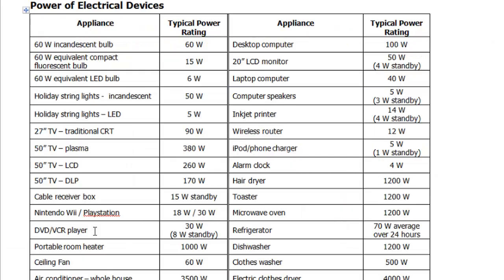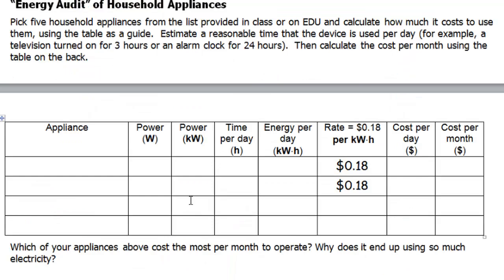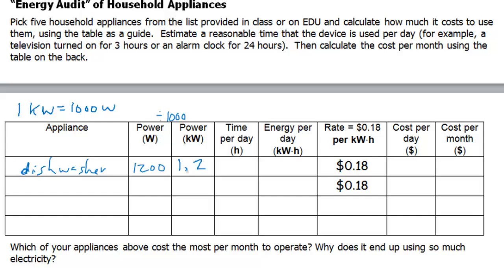Here's what this table looks like. Let's pick one device as an example: a dishwasher, which is a 1200-watt dishwasher, and you run it once per day, and that cycle usually takes about 45 minutes. So let's put these numbers into the table. Appliance: dishwasher. Power: 1200 watts. We want to convert that to kilowatts first by dividing by 1000, since 1 kilowatt equals 1000 watts. So this becomes 1.2 kilowatts. Time per day: the dishwasher takes about 45 minutes, so that's 0.75 hours.